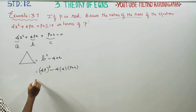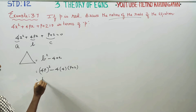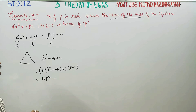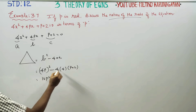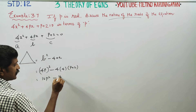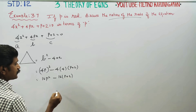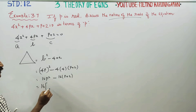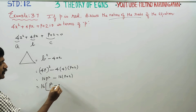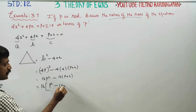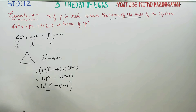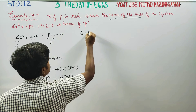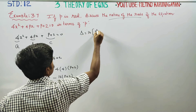If you expand this, you will get 16p squared minus 16 into p plus 2. You can take 16 as common, and you will get p squared minus p minus 2. So delta is equal to 16 into p squared minus p minus 2.